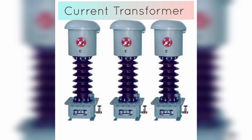CTs are commonly used in power systems to measure and monitor the current flowing through transmission lines, distribution lines, and electrical equipment such as generators, transformers, and motors. They are also used for protective relaying, detecting and isolating faults by sensing abnormal current levels and triggering protective devices. CTs are designed to operate at a specific frequency and current range and must be properly selected and installed. Additionally, CTs must be calibrated periodically to ensure their accuracy over time.